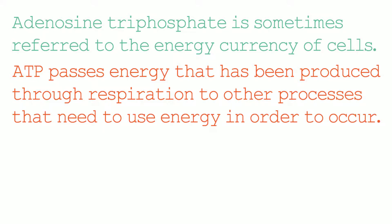An example would be active transport. Active transport is the net movement of particles against the concentration gradient. This means that particles are moved from a place where there is a low concentration to a place where there is a high concentration. Energy is needed for this process to occur.